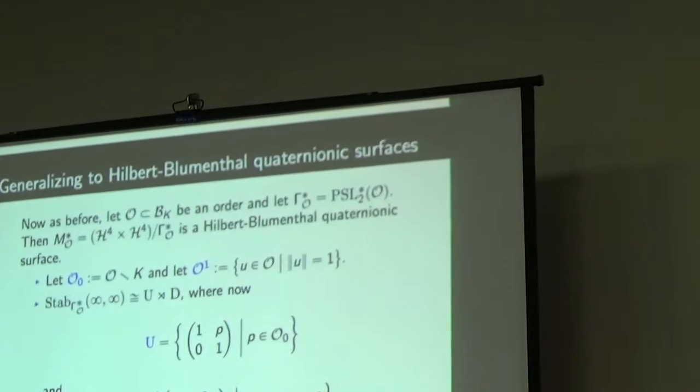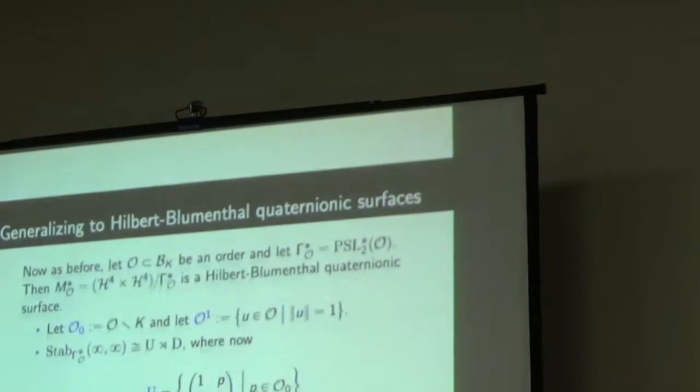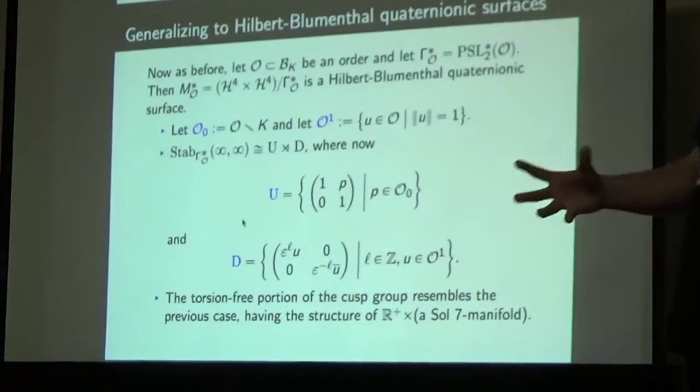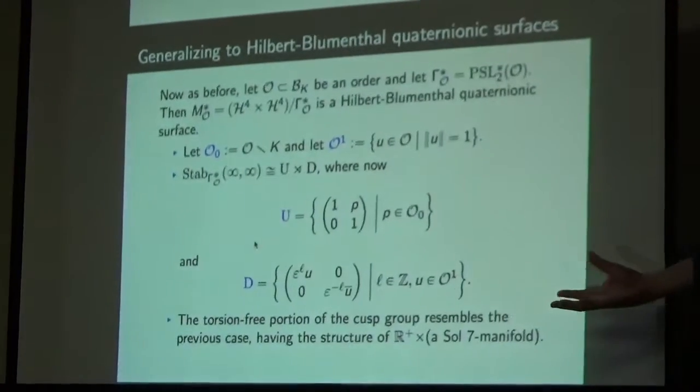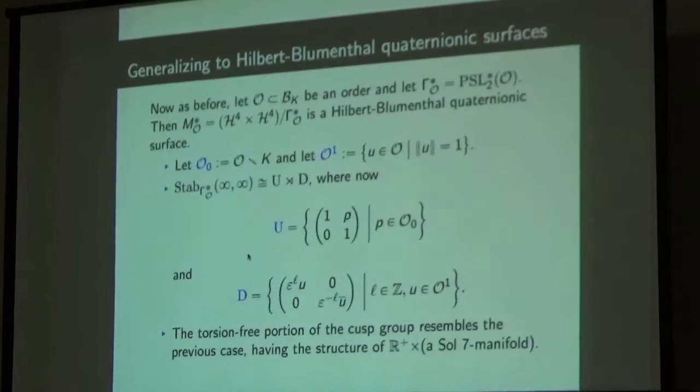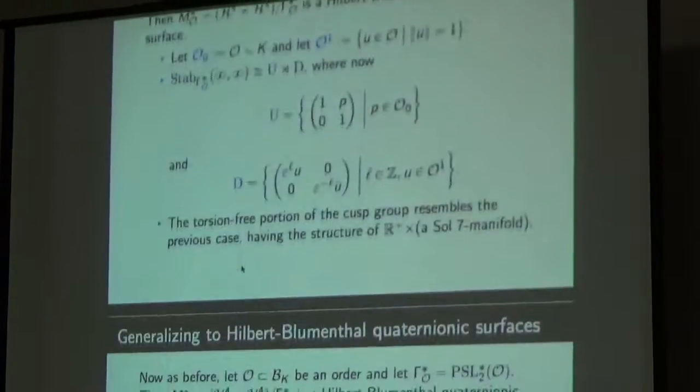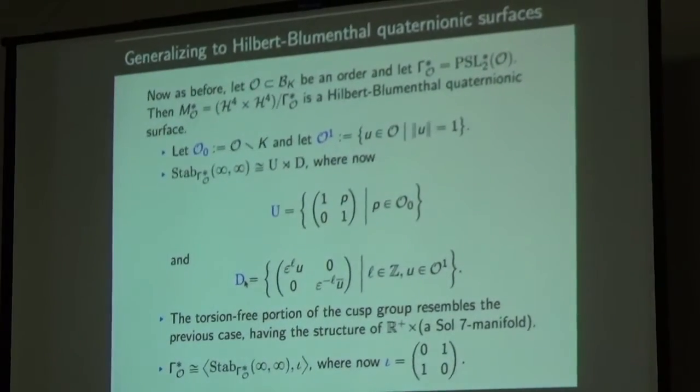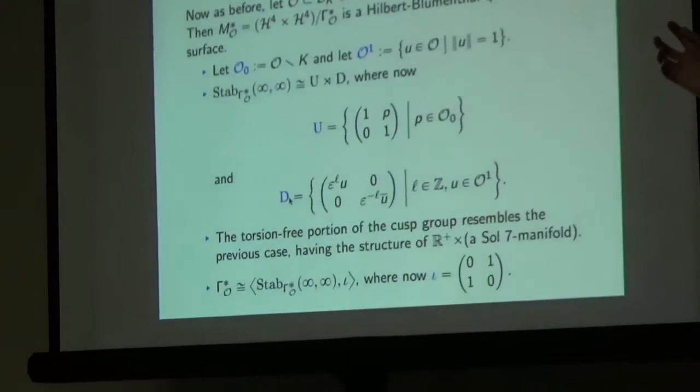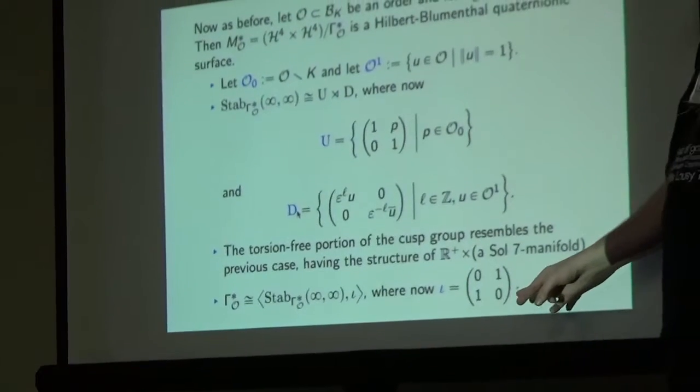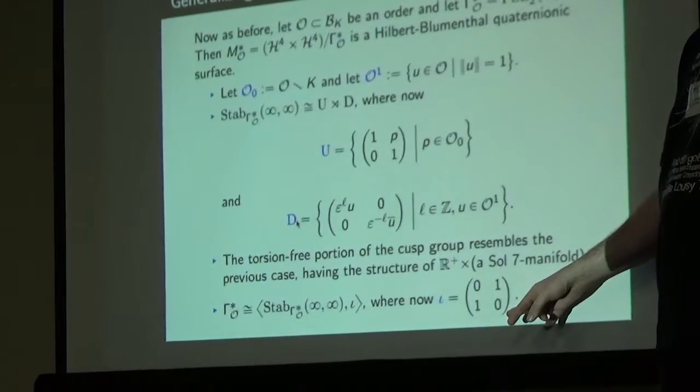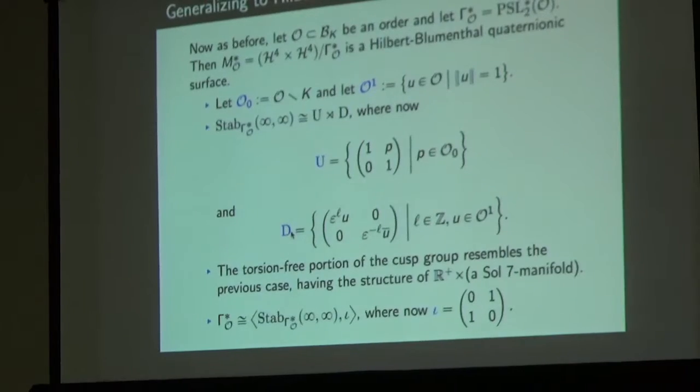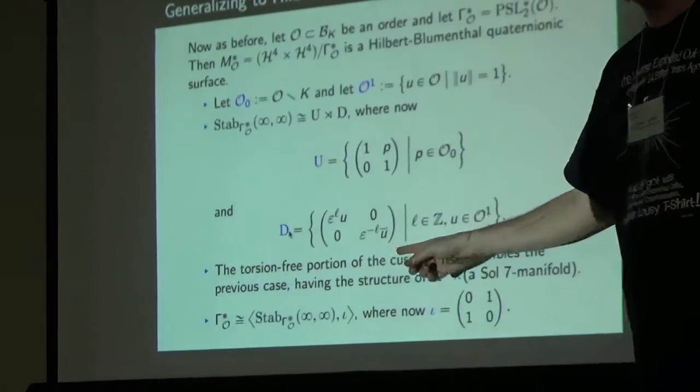This group of diagonal matrices, I still have this fundamental unit telling me a lot, but there's also a unit in the order in the quaternion algebra. So that's sort of like a rotation. That's something that's new that has to be dealt with. The rest of it generalizes very well. So if I just look at the torsion-free part of the cusp, it's basically the same thing, only instead of R+ cross the Sol 3-manifold, it's R+ cross the Sol 7-manifold. If I want the full group, again, it's very similar, but now my determinant is different. So this takes some getting used to to think of this as being the proper inversion isometry, but it turns out that it is. And so really the main difference is this guy, this U.